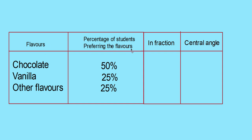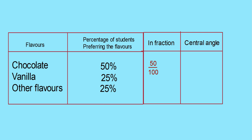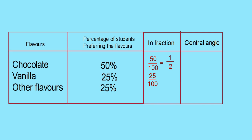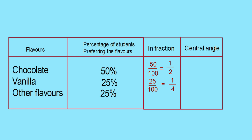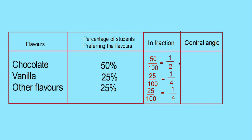The table has columns for flavors and percentage of students preferring each flavor. Now we change each percentage to a fraction. 50% becomes 50 by 100, equal to 1 by 2. 25% becomes 25 by 100, equal to 1 by 4. The other flavors are also 25%, so that is also 1 by 4. Now find the corresponding central angles: the fraction 1 by 2, so half into 360 equals 180 degrees.